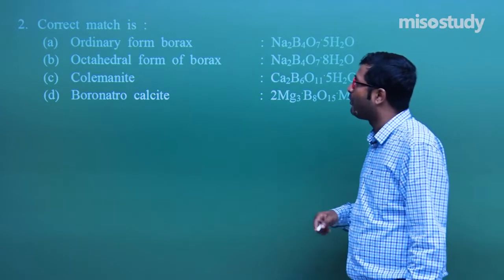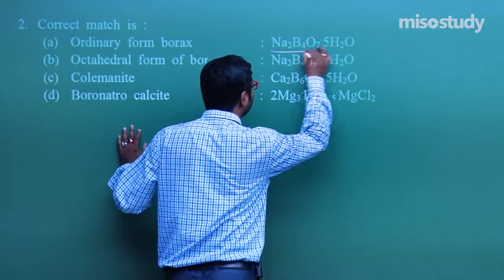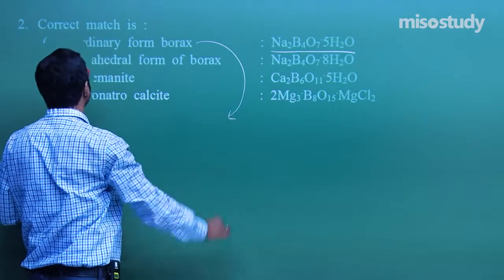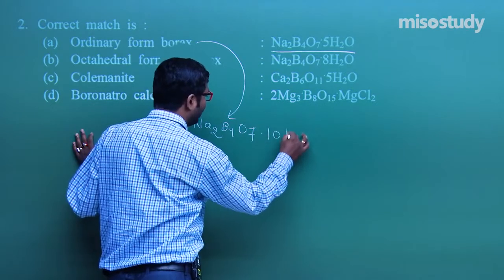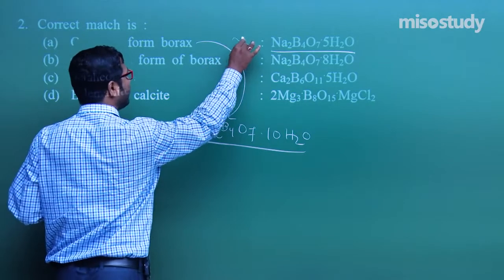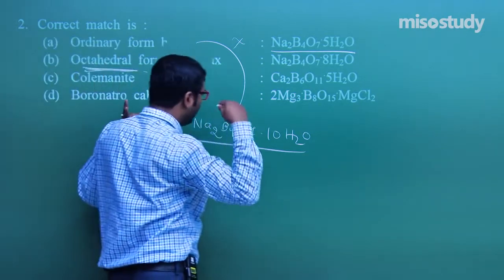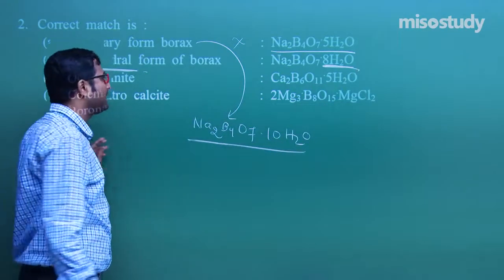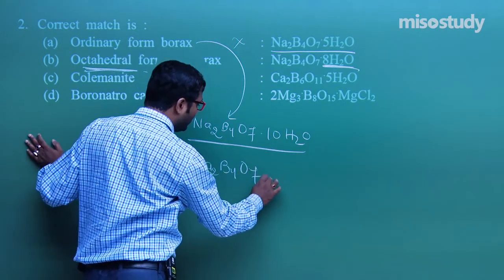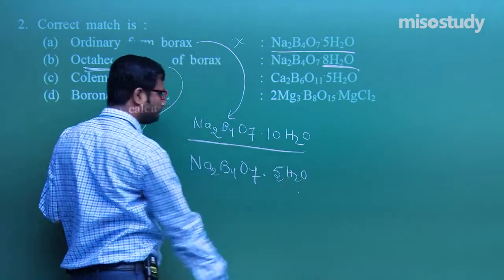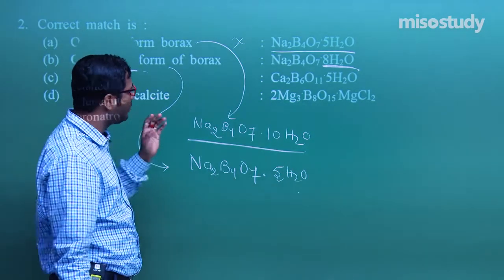The next part is a correct-match question. The ordinary form of borax — the formula is Na₂B₄O₇·10H₂O, not 5H₂O, so that is not the correct match. The octahedral form of borax is Na₂B₄O₇·5H₂O — though the name suggests 8, during lecture I explained it has 5H₂O. The formula of colemanite is Ca₂B₆O₁₁·5H₂O, and that is the correct formula.